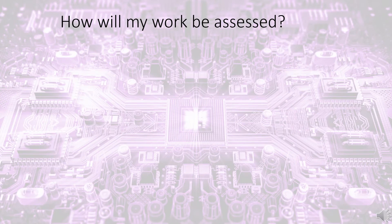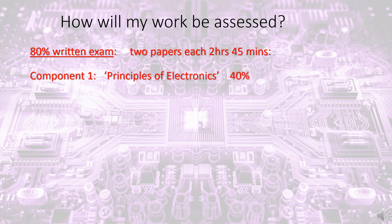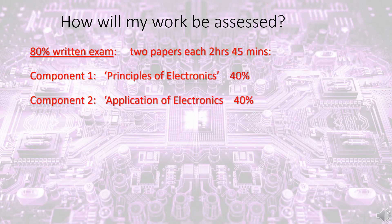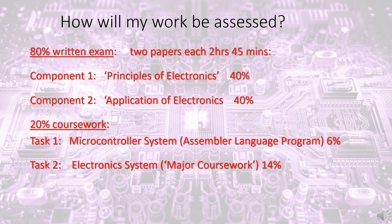How will my work be assessed? 80% of the final marks are awarded from two exam papers, two hours and 45 minutes each. Component one is principles of electronics worth 40%, and the second component is applications of electronics worth 40% as well. These papers cover two years of work. The final 20% of the marks consist of coursework projects. The first is a microcontroller system in assembler language program, worth 6%. The major coursework worth 14% is electronic systems. These are internally marked and moderated by the exam board.